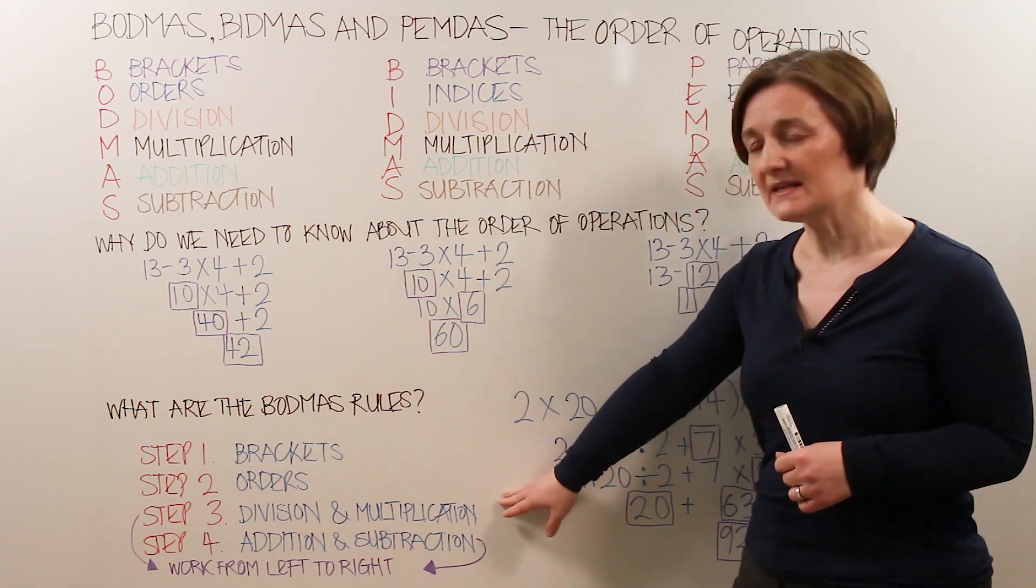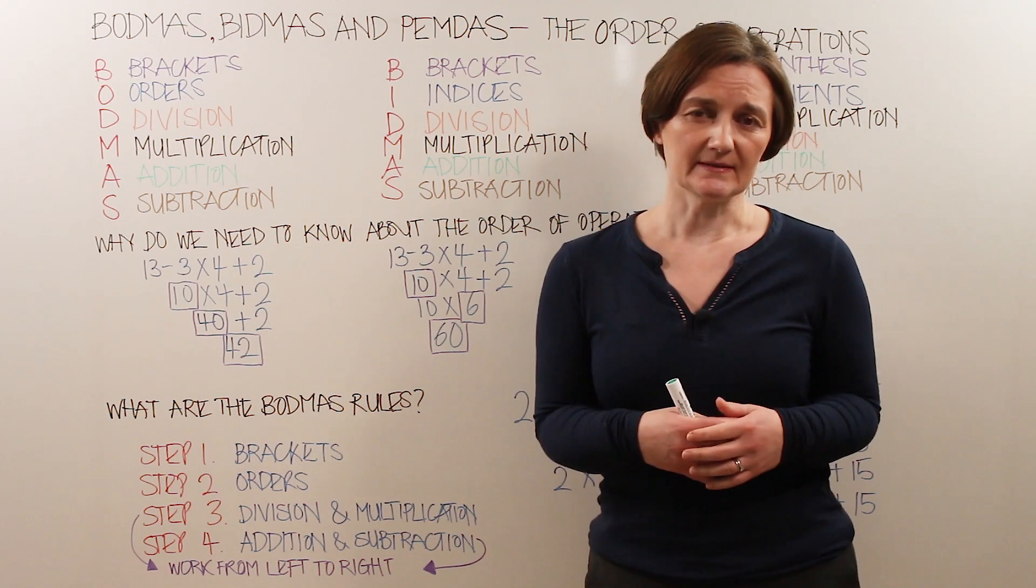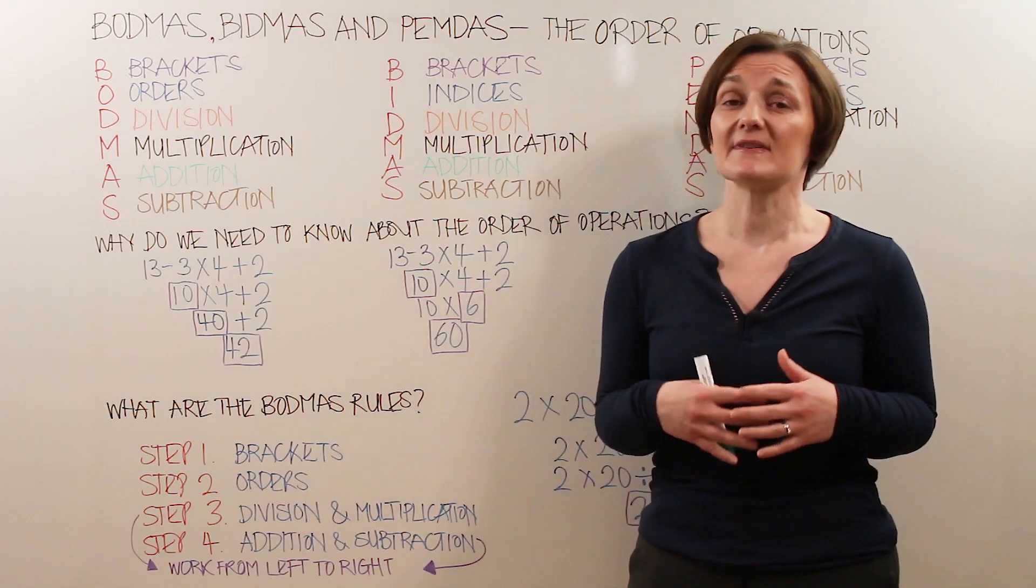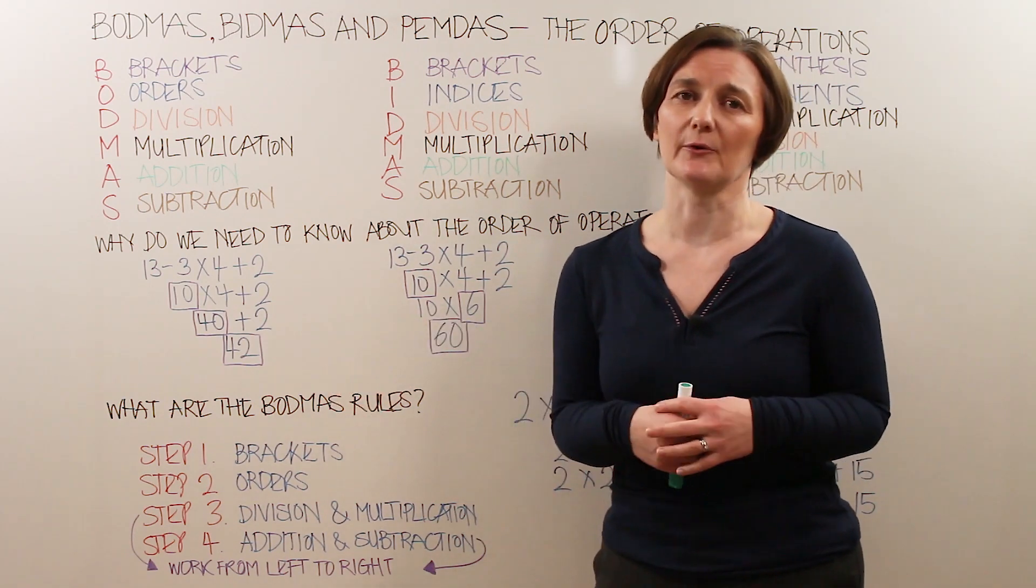Step 3, D is for division and M is for multiplication. Some operations have the same precedence, and division and multiplication have the same priority. So work these out from left to right order in your problem.